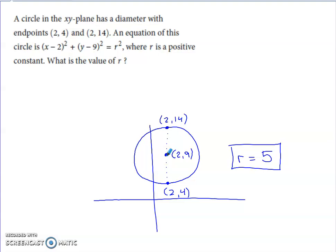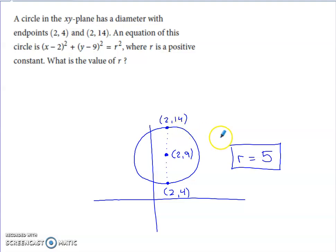Going up 5 units from the center gets to (2, 14), a point on the circle's diameter. Going down 5 units from the center reaches another point on the diameter. So we go 10 units total across the diameter. The radius is half of that — 5. The complete equation of this circle has 25 on the right side.